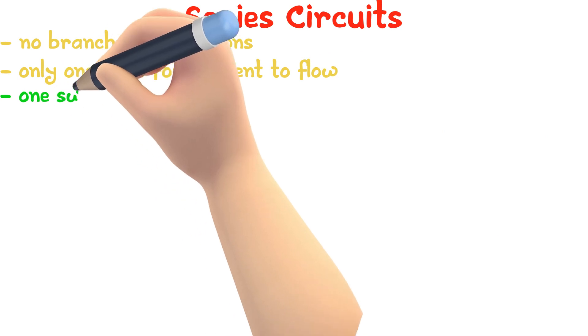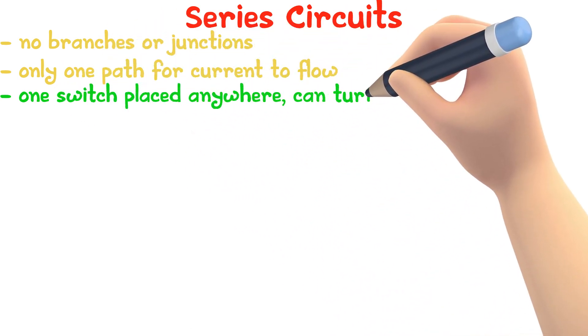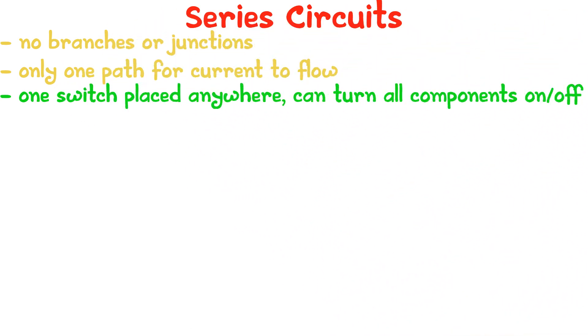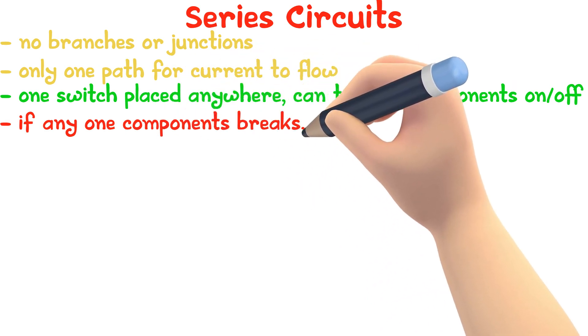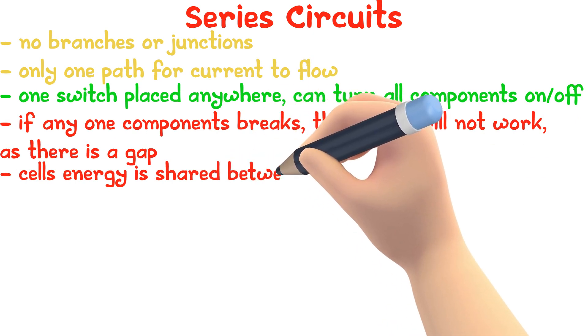In a series circuit, one switch placed anywhere can turn all components on and off. If any one component breaks, the circuit will not work since there is a gap, and the cell's energy is shared between all components.